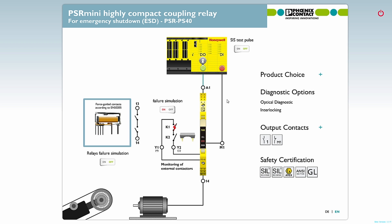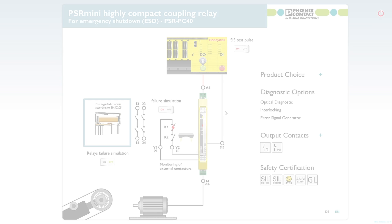Let's have a look at the differences between PS40 and PC40. The PS40 will not manipulate any test pulses coming from the SIS. Now let's have a look at the same scenario only with PC40. Here you can see that the PC40 will manipulate the SIS test pulses in case of a failure. This is symbolized with the color change to red.